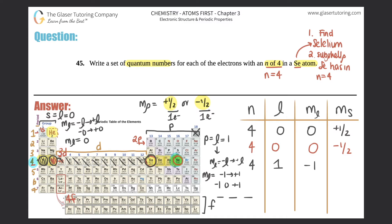For the electron in the first p orbital, ml equals negative one, and since it goes up first, ms equals plus one half: (4, 1, -1, +1/2). For the next orbital, ml equals zero, same spin direction: (4, 1, 0, +1/2). That gets rid of those two. For the next electron, ml equals positive one, still going the same direction: (4, 1, +1, +1/2). That's the Pauli exclusion principle — all spin up first.